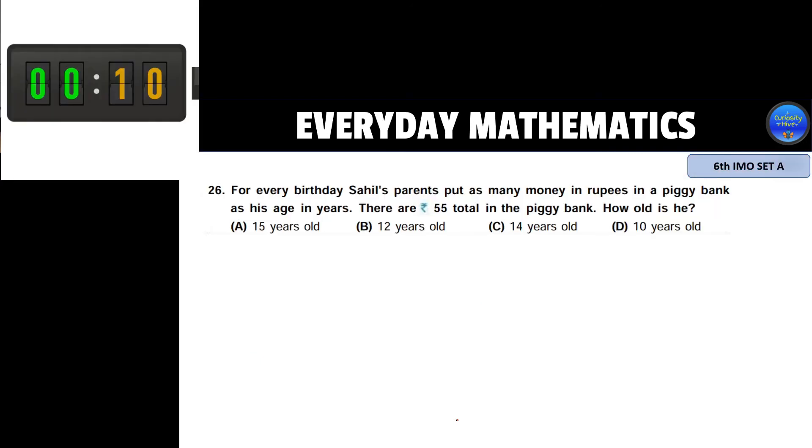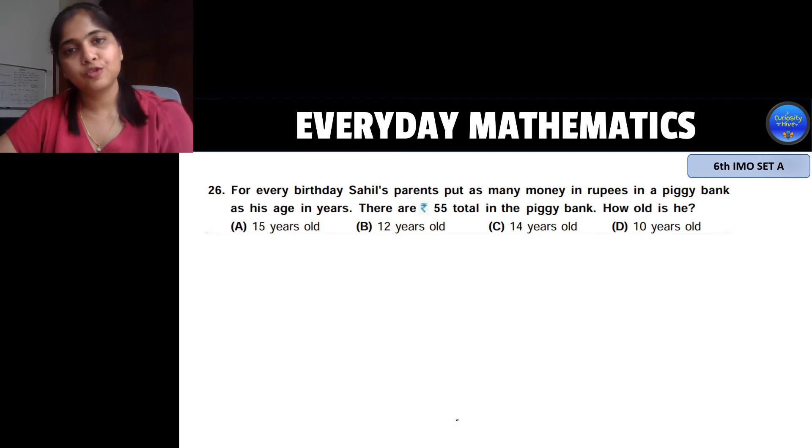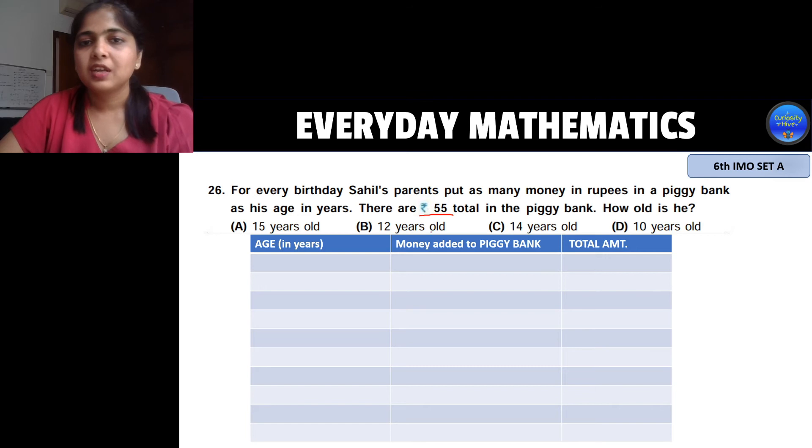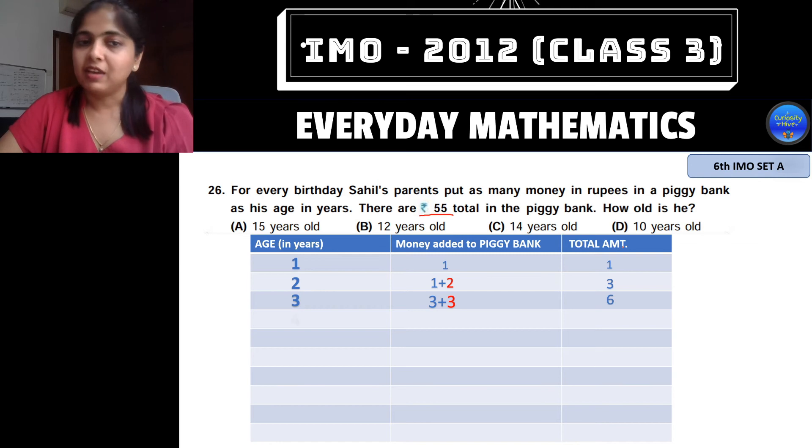Next question for you. Now this is a good question for you to try on. Now what they say is that Sahil's parents put as many money in rupees in piggy bank as his age in years and we need to find till how long they keep putting money till the piggy bank reaches 55 rupees. So let's make a table which puts his age the money added to piggy bank and the total amount. So when he is 1 year old 1 rupee added the total amount in piggy bank is 1. When he is 2 years old his parents add another 2 rupees to the piggy bank so the total is 3. When he is 3 years 3 rupees gets added to the existing amount which makes it 6. When he is 4 years 4 rupees get added to the existing amount which makes the total to 10.